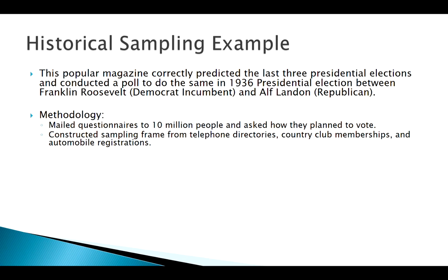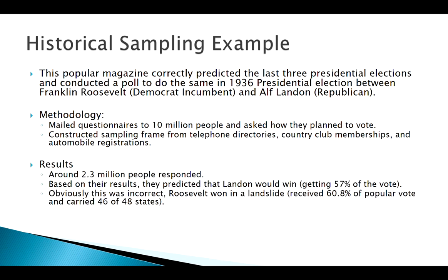Here's where they got their sampling frame. Looking at the results, they got a large number back and predicted that Alf Landon would win — and win pretty big. But actually, nobody's heard of Alf Landon, so you can probably guess what happened. FDR, Franklin Roosevelt, won, and he won really big — in fact, the largest win in presidential election history.